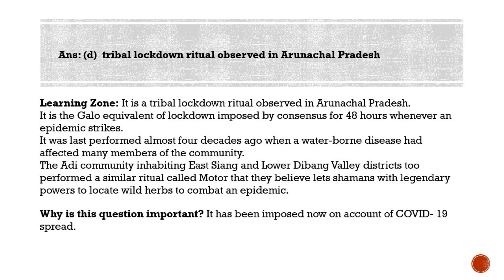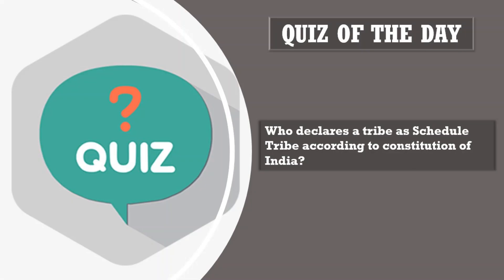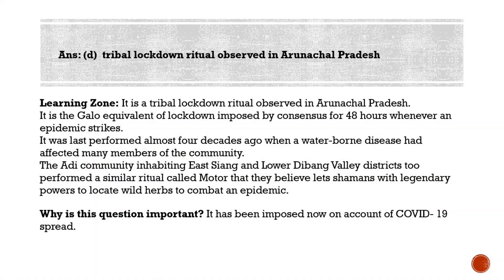Today's quiz question is: who declares a tribal group as a Scheduled Tribe under the Constitution of India — is it the state government, the Governor, or the President? Please post your answers in the comment section. Coming back to the discussion — Rinam is a ritual practiced by the Gallo tribe; it is a kind of lockdown imposed by consensus for 48 hours whenever an epidemic strikes.